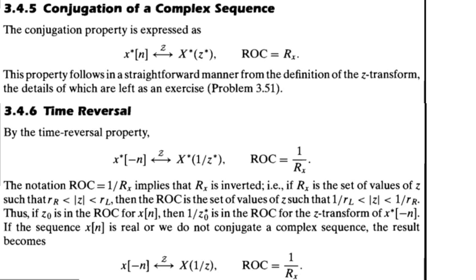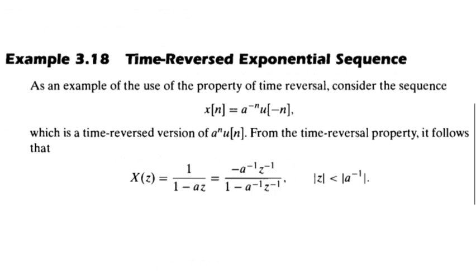We will look at this with the help of a few examples. In Example 3.18, the time-reversed exponential sequence: the input sequence x(n) is equal to a raised to the power −n times u(−n). This is similar to Example 3.1. However, what we are going to do is replace Z-inverse with Z — previously we had 1 divided by (1 − a·Z⁻¹).